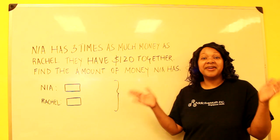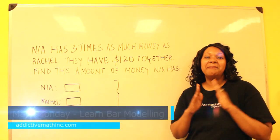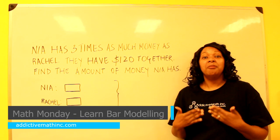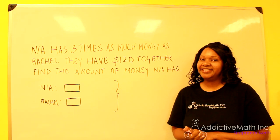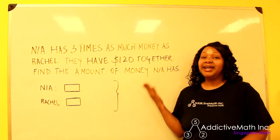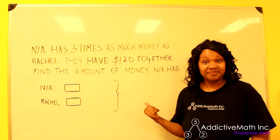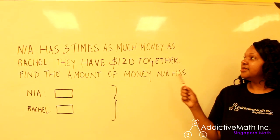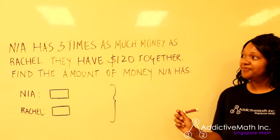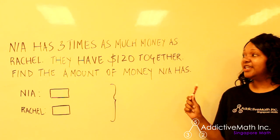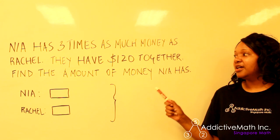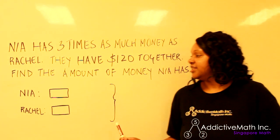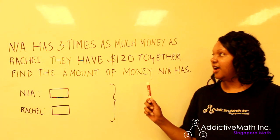Hello everyone, welcome back — it is Math Monday! I'm so excited you're here because I have another bar modeling problem for you. It's my favorite! This is a classic money bar modeling problem. Let's read it together: 'Nia has three times as much money as Rachel. They have $120 together. Find the amount of money that Nia has.' Let's get started.